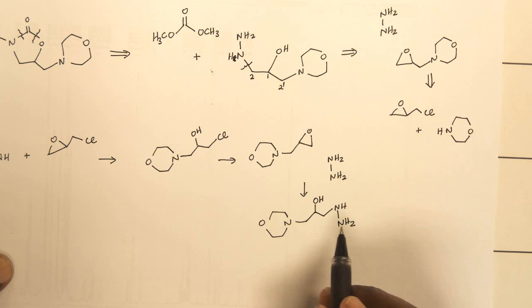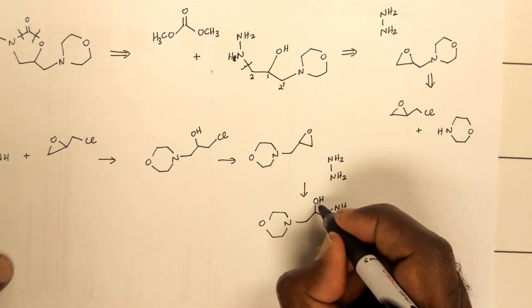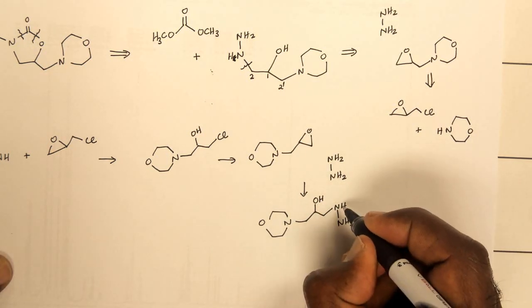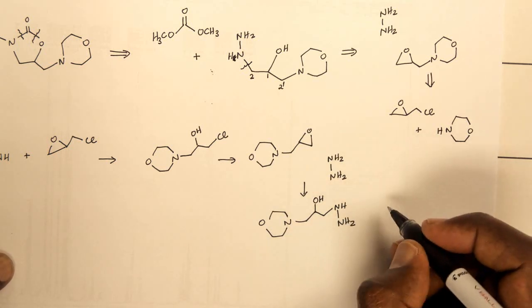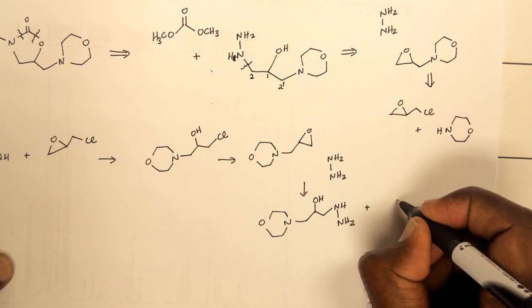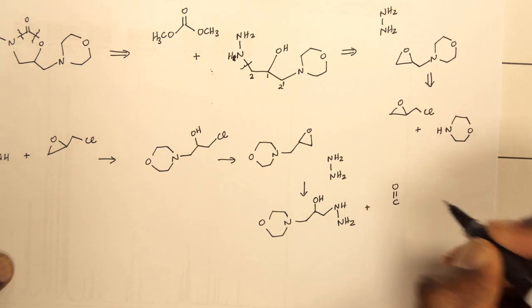Once you have that, you can recognize that you have the hydroxy group and the NH group like you see here, which would give you a 5-membered ring, which is quite stable.